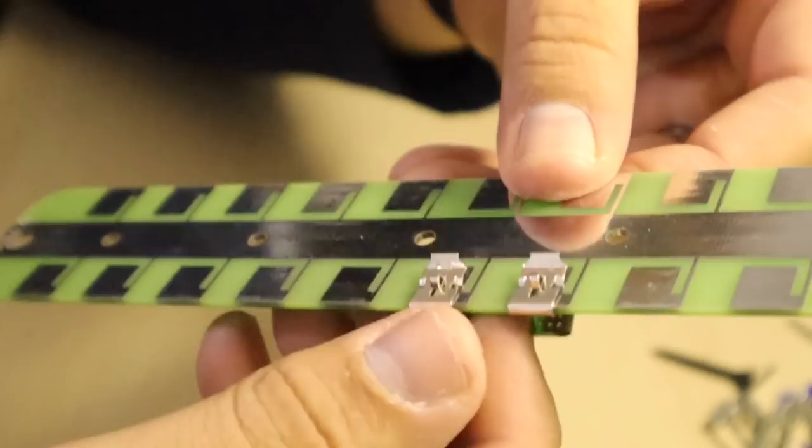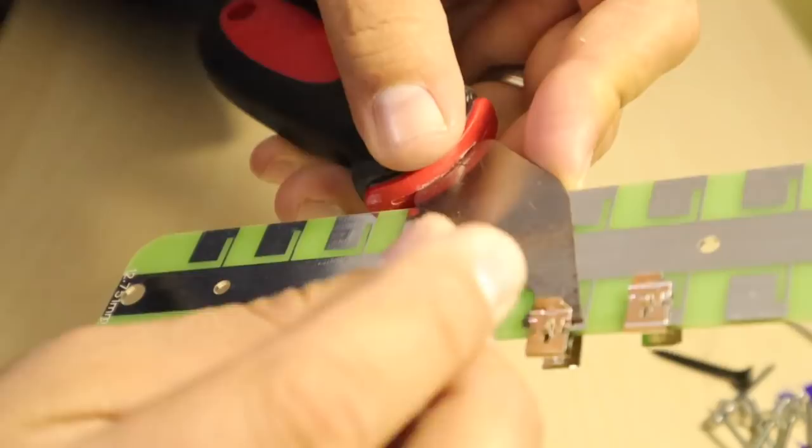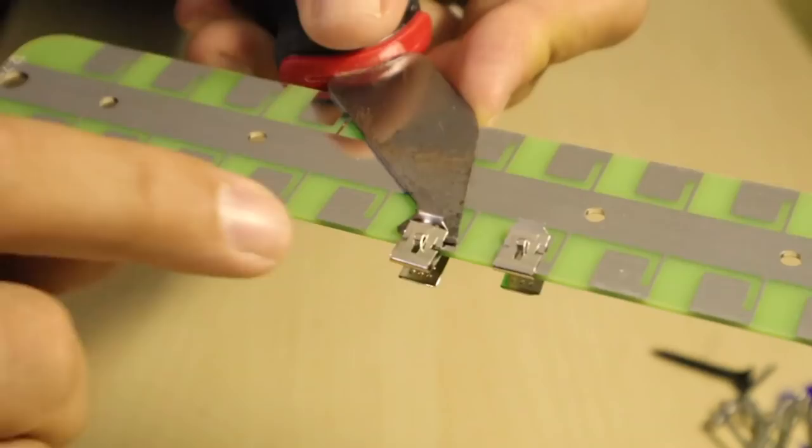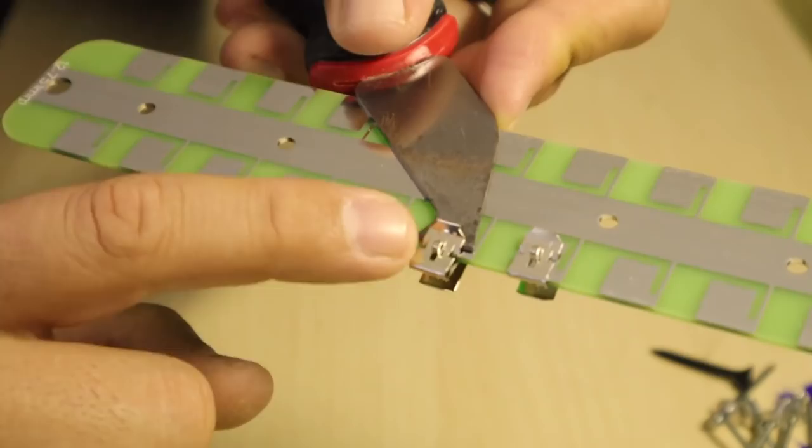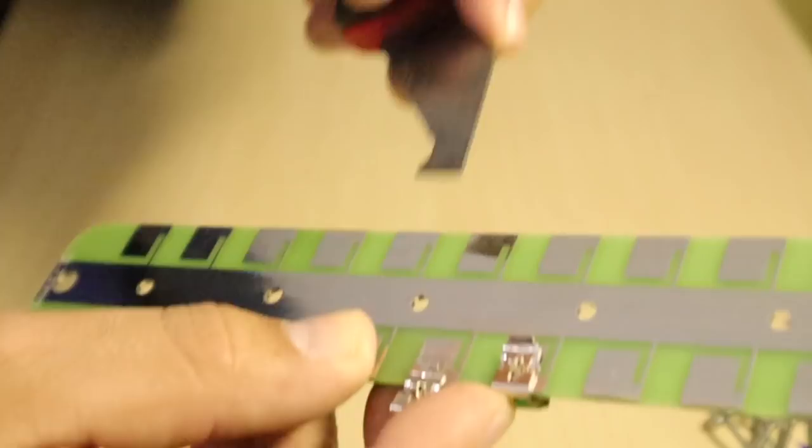If you have to remove it because it's not aligned, use something to push it back out because once the clip sits in, it grabs the PCB. You want to basically lift the top part because those clips have a little piece that's sticking into the PCB trying to grab. If you don't lift that, it's going to damage the PCB.